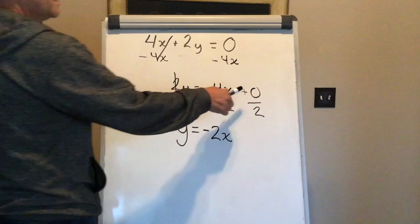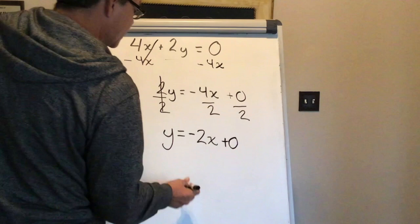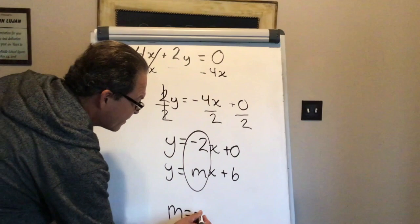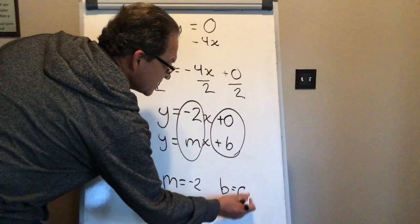Here, when you divide anything by 0, you always get 0. So in the equation y equals mx plus b, my slope is negative 2, and my y-intercept is 0. If you want to give this as a coordinate, then it's (0, 0).